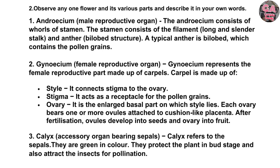The stamen consists of the filament and anther. A typical anther is bilobed which contains the pollen grains. Gynoecium represents the female reproductive part made up of carpel. Carpel is made up of style, which connects the stigma to the ovary. Stigma acts as a receptacle for the pollen grains. The ovary is the enlarged basal part on which style lies. Each ovary bears one or more ovules attached to a cushion-like placenta. After fertilization, ovules develop into seed and the ovary into fruit.